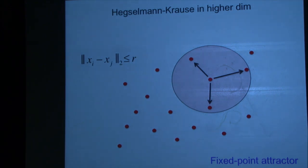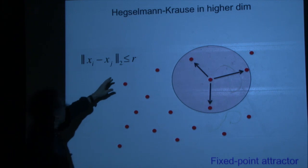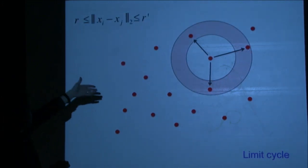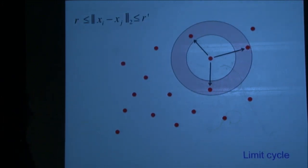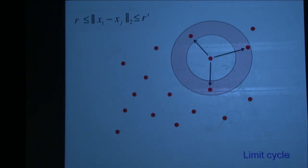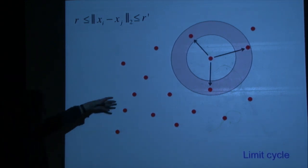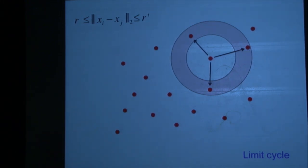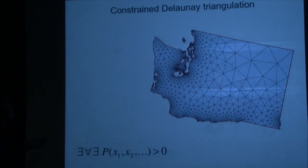In higher dimensions, Hegselmann-Krause with the same r converges — there's a fixed-point attractor. But if you have an annulus in two dimensions, you could have limit cycles. It's easy to engineer a situation where you start having limit cycles with an annulus. So you can ask: what if you have arbitrary shapes? In particular, this induces a geometric graph, and people in robotics love something like the constrained Delaunay triangulation.